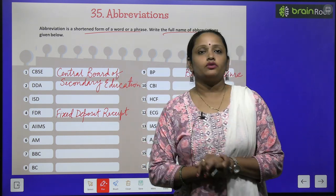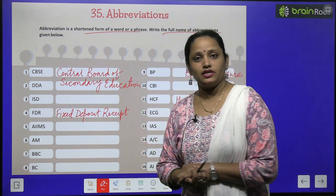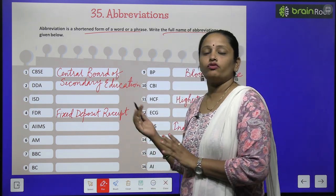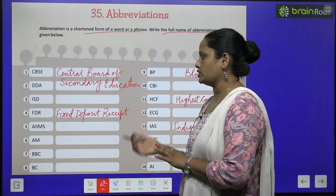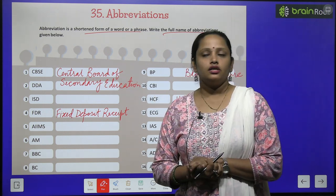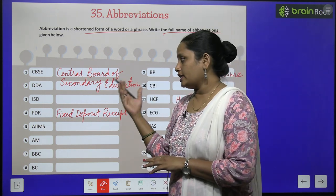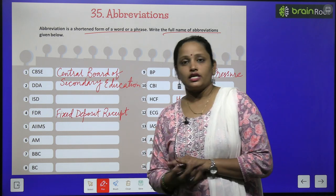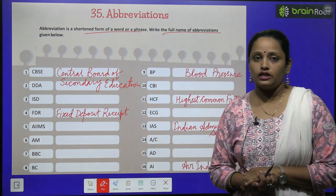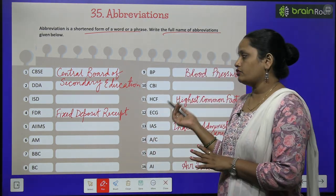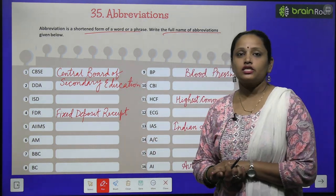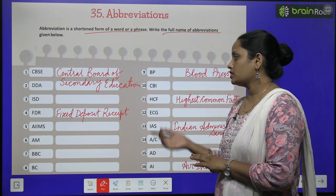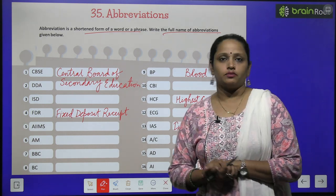For example, the first one is CBSE, jiska full form hai Central Board of Secondary Education. Ab jo hai fourth one, jaise ke likha hai FDR, jiska full form hai Fixed Deposit Receipt.